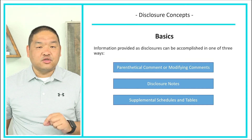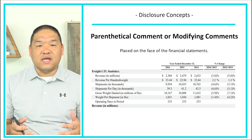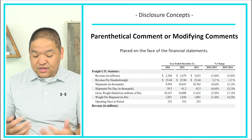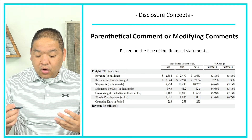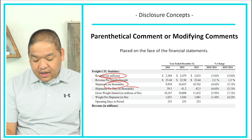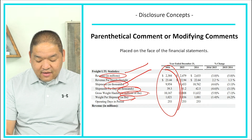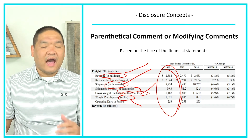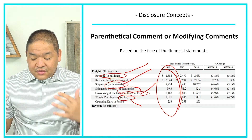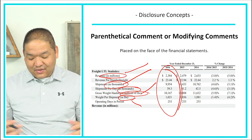The first method is parenthetical comments or modifying comments. These are placed on the face of the financial statements — right on the financial statement itself. For example, on an income statement, parenthetical comments tell us that numbers are not in hundreds of dollars but instead in millions. So a figure of 2,384 actually means two billion, three hundred and eighty-four million dollars.